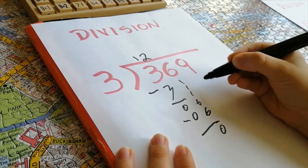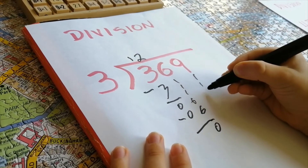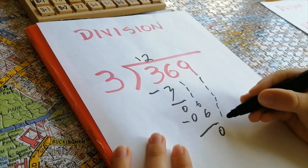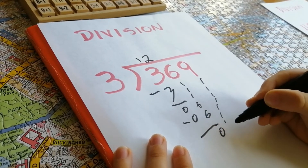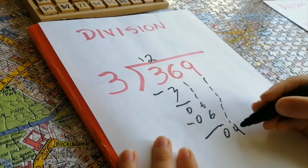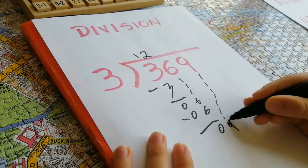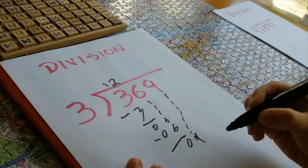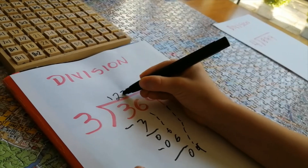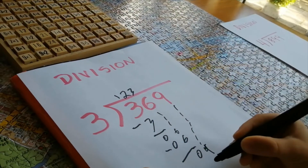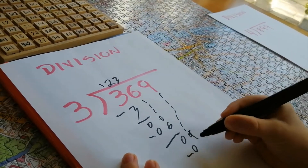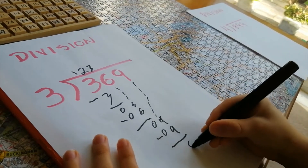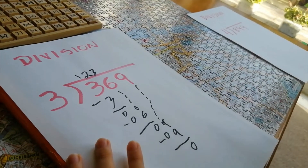Baja la cifra siguiente que es el nueve. ¿Cuántas veces está el tres en el nueve? Tres veces. Tres por tres, nueve, menos nueve, cero. La respuesta es 123.